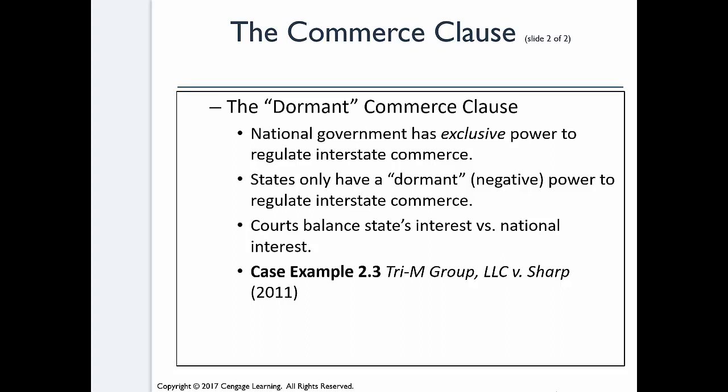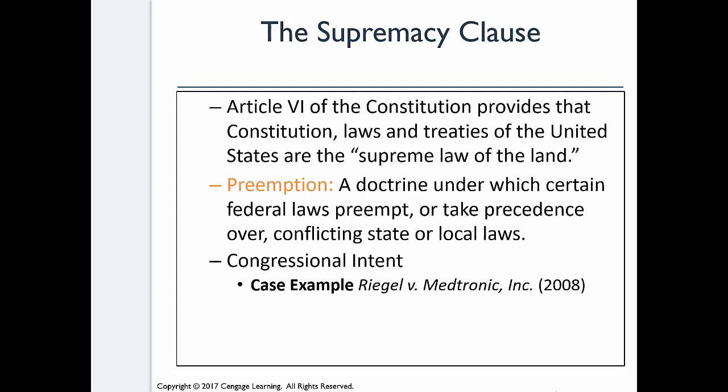The Supremacy Clause, Article 6 of the United States Constitution, makes it clear: the Constitution, the laws, and the treaties of the United States are the supreme law of the land. Federal law preempts and takes precedence over conflicting state or local laws. State and local laws are great if they're filling in a gap — like North Carolina having a state bird or a state dog. There's no conflict there because the federal government hasn't addressed those. But if it conflicts, federal law always wins.